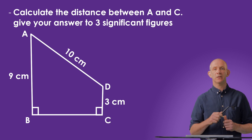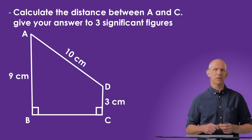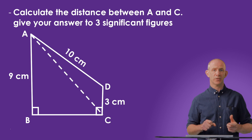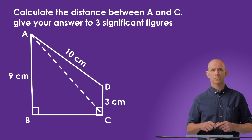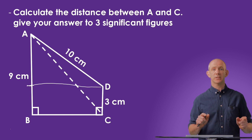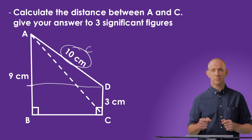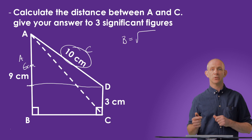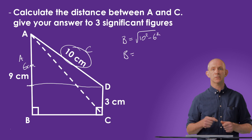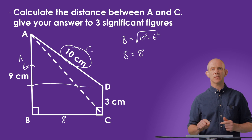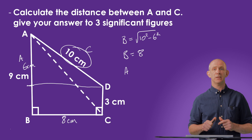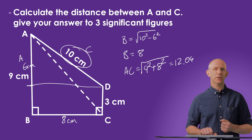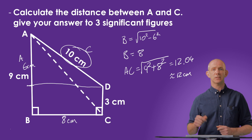Here we're asked to calculate the distance between A and C. There's no direct line for AC, so let's add that first. In order to calculate AC, we'll need to find the length of BC. We can do that by drawing a line across from D to form a right-angled triangle with a hypotenuse AD of 10 and a horizontal side of 9 minus 3, which gives us 6. Rearranging the formula and substituting gives B equals the square root of 10 squared minus 6 squared, which gives us 8. Now knowing that BC equals 8 and AB equals 9, we calculate AC as the square root of 9 squared plus 8 squared, which gives us 12.04. Rounding to three significant figures, AC equals 12 centimetres.